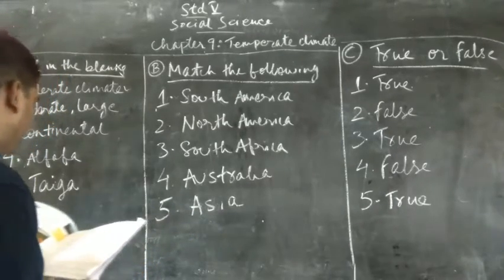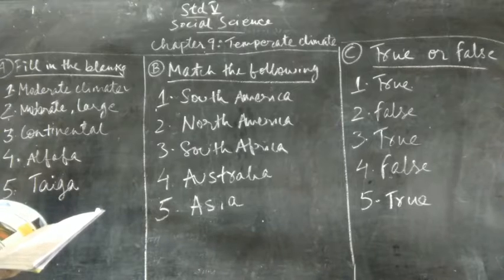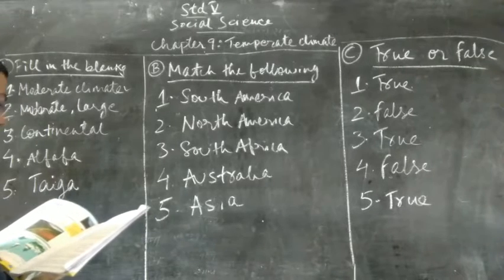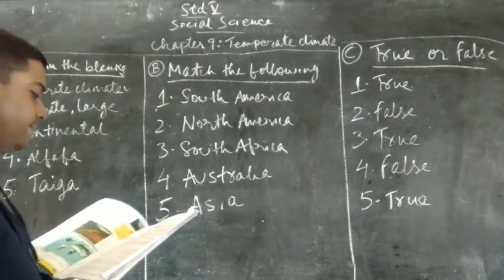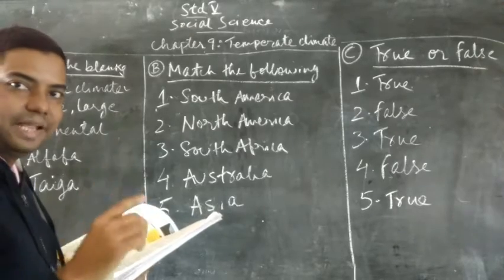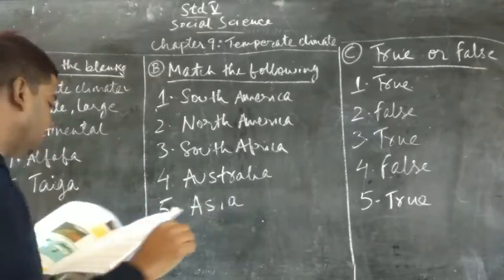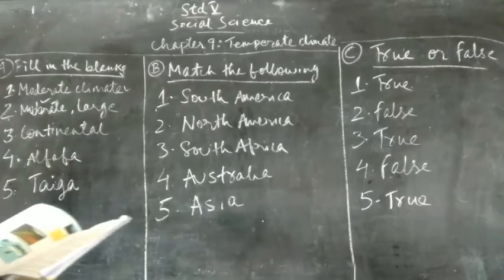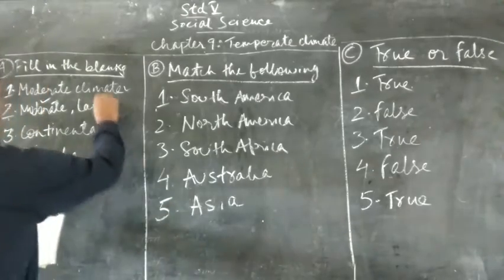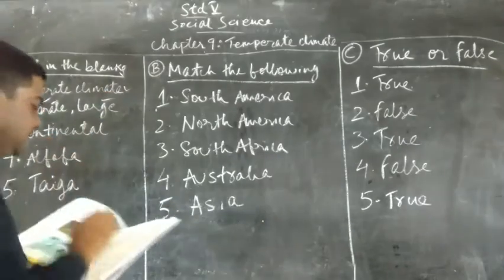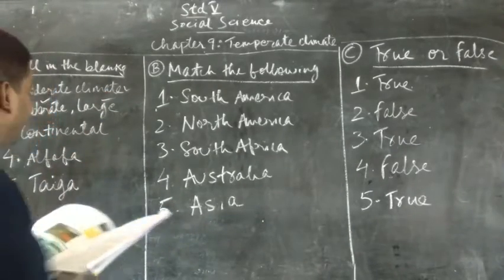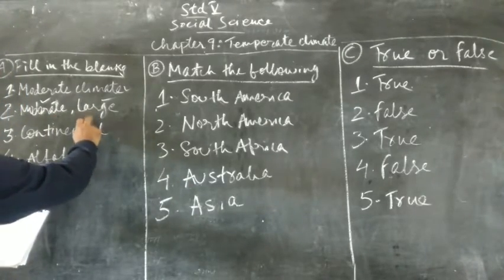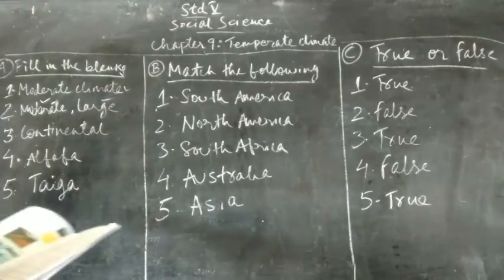Question number 2: Temperate zones have dashed climate and dashed diurnal range of temperature. So we have two fill in the blanks. The first is moderate and the second is large. That is, temperate zones have moderate climate and large diurnal range of temperature.